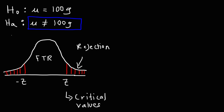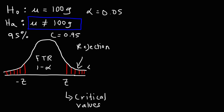Let's say the employee conducts the test at a 95% confidence level, so c = 0.95. Since c = 1 − alpha, alpha equals 0.05 — this is the significance level. Because alpha is split into two regions, the right side is alpha/2 and the left side is alpha/2, each with an area of 0.025, and the area in the middle is 0.95.